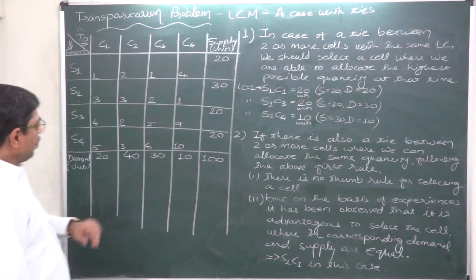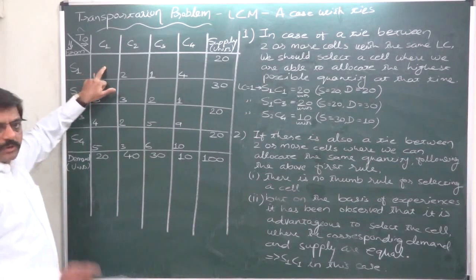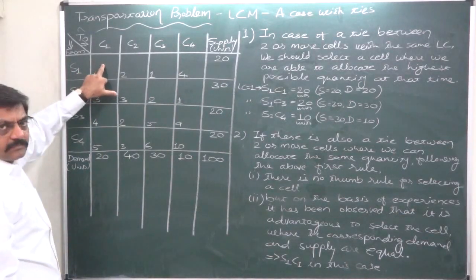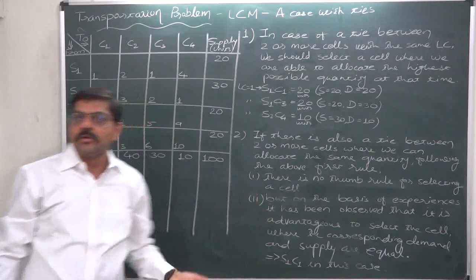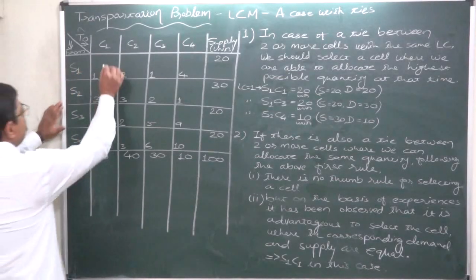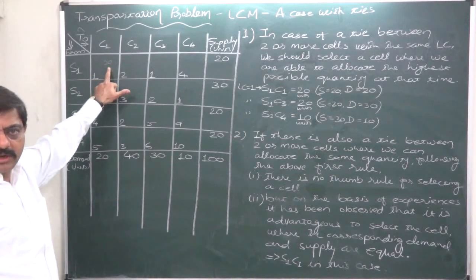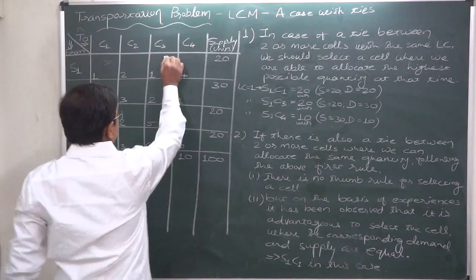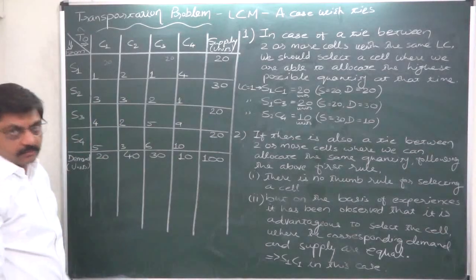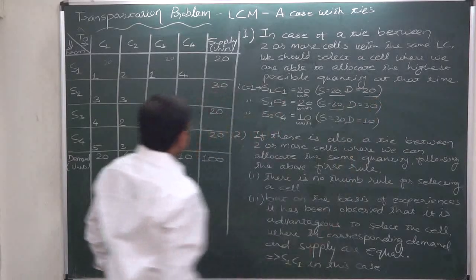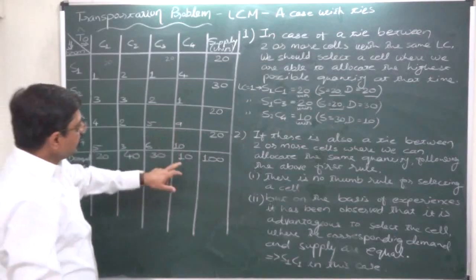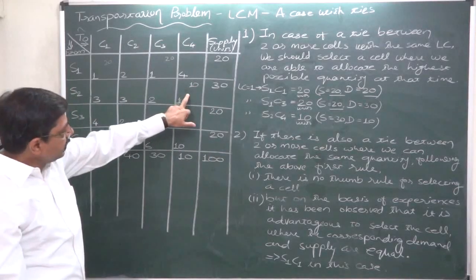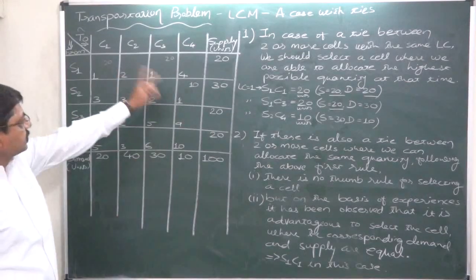The first tied cell is S1C1. The rule for allocation is: demand or supply, whichever is lower. Demand is 20, supply is 20 — both are the same, so we can allocate 20 units. The second tied cell: demand is 30, supply is 20, whichever is lower is 20 — so we can allocate 20 units there too. The third tied cell is S2C4: demand is 10, supply is 30, whichever is lower is 10 — so we can allocate 10 units there.